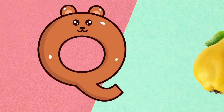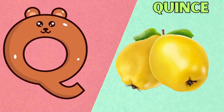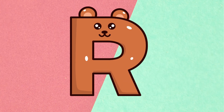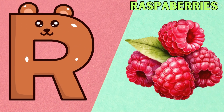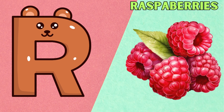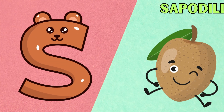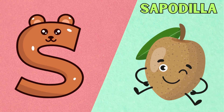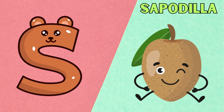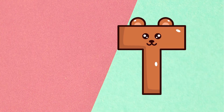Q is for Quince. Q, Q, Quince. R is for Raspberries. R, R, Raspberries. S is for Sapadilla. S, S, Sapadilla.